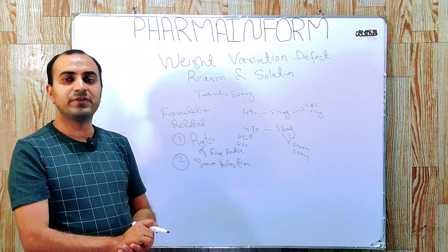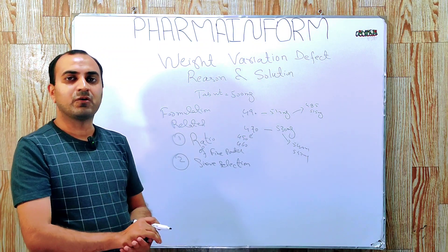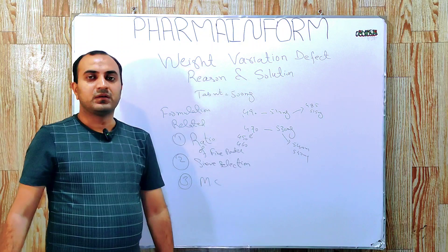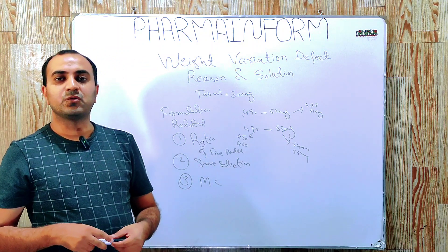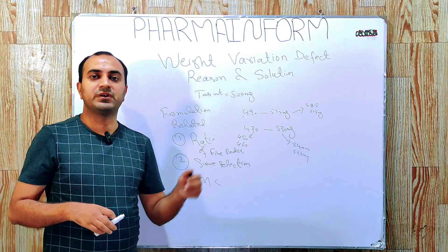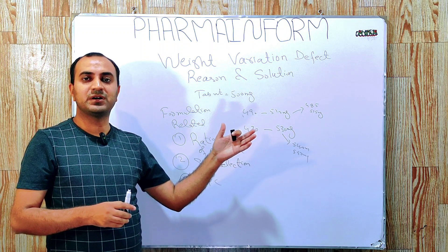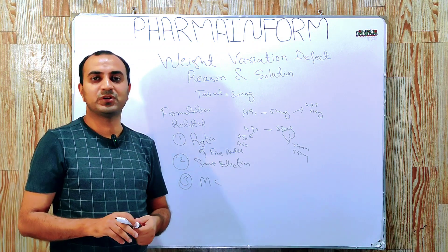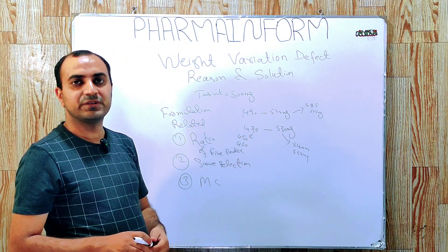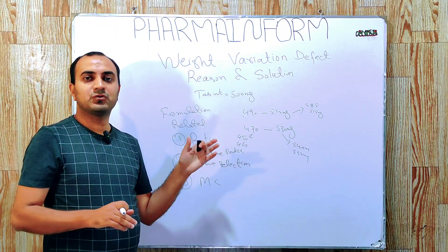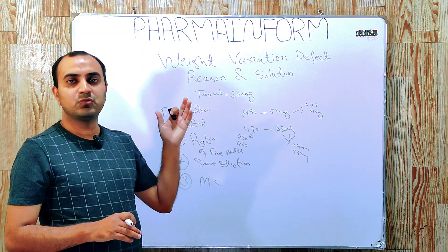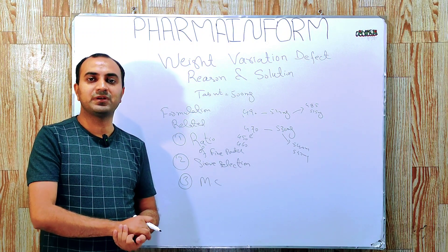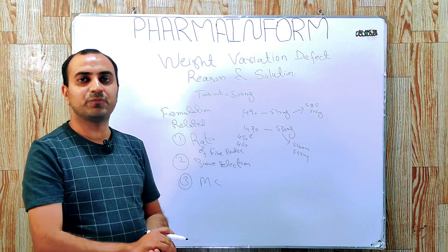The solution is to always select the right sieve according to the tablet weight. The third formulation related issue is moisture content. If our final blend contains more moisture — meaning it is not properly dried — it will result in weight variation. The reason is the formation of a rat hole, which results in weight variation of the tablets. To solve this issue, properly dry the granules and keep your moisture within the ranges described in your batch manufacturing record.